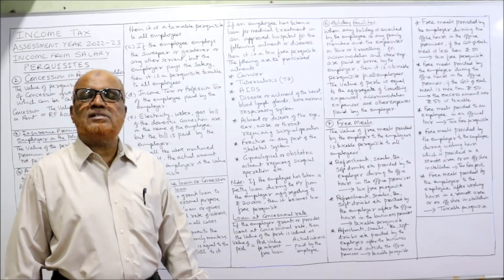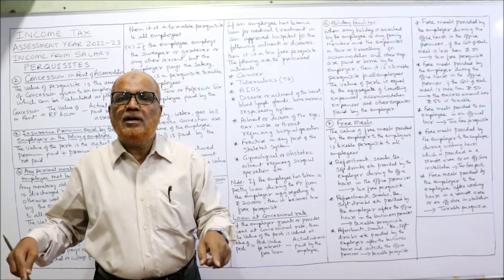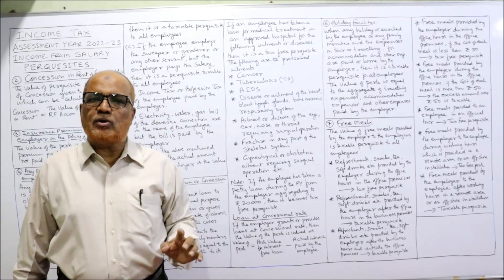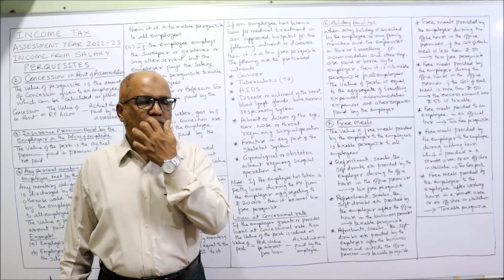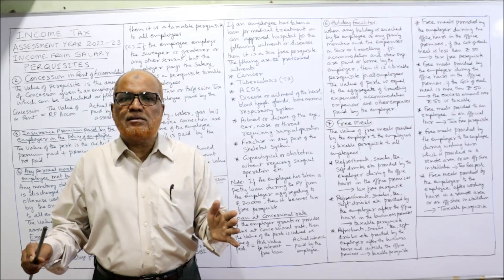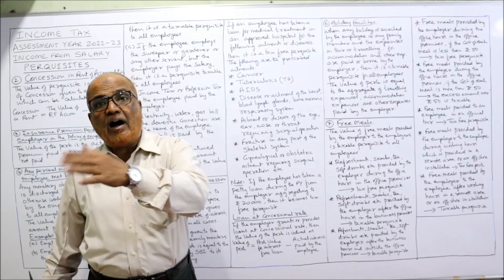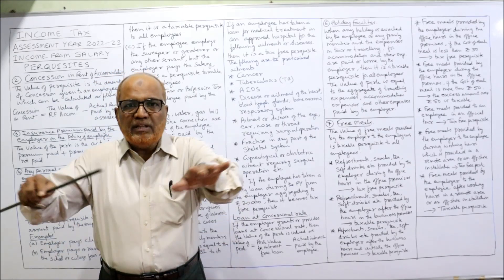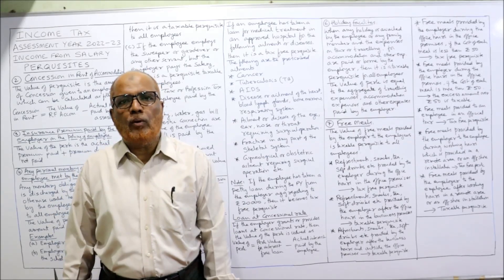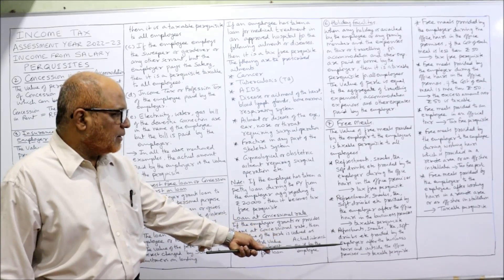Refreshments, snacks, or drinks provided by the employer after business hours but within the business premises is a taxable perquisite. For example, if business hours are 10 AM to 5 PM and the employer provides soft drinks or refreshments after 5 PM but still within the business premises, it is a taxable perquisite in the hands of the employee.